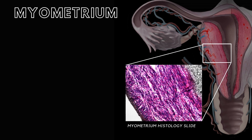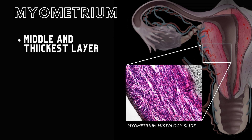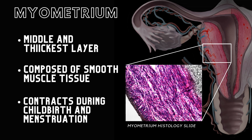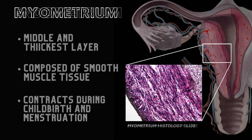The myometrium is the middle and thickest layer and is made up of smooth muscle tissue. The myometrium contracts during childbirth and menstruation.